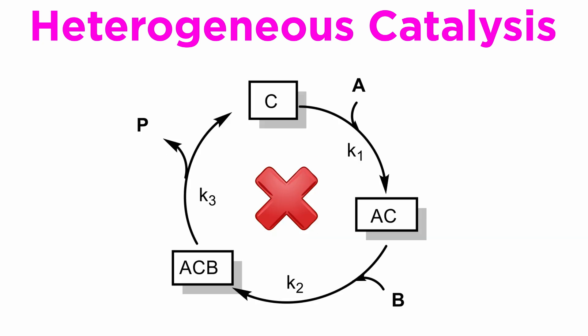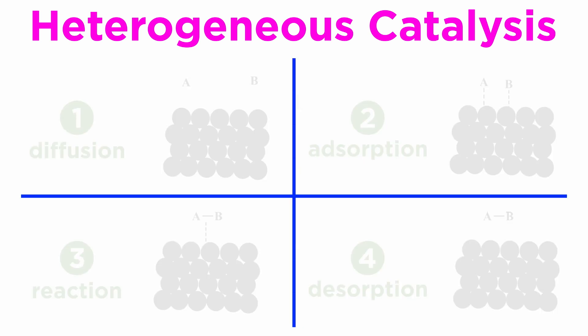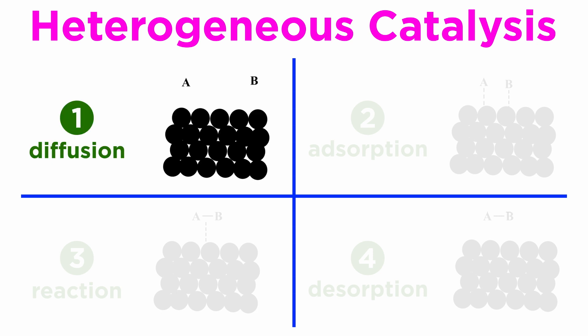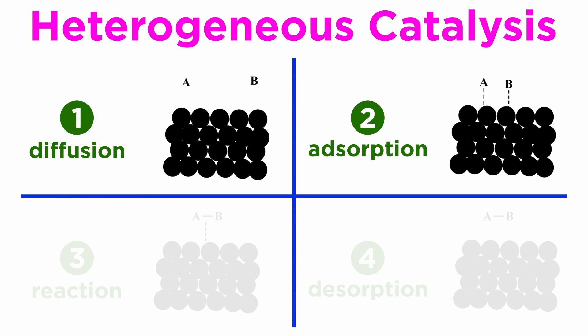However, the mechanism of this type of catalysis is more complex and less straightforward to depict than for the catalytic cycles we just saw. Catalytic cycles in this context also include several steps. Of course, the molecules first have to diffuse towards the catalytic surface.